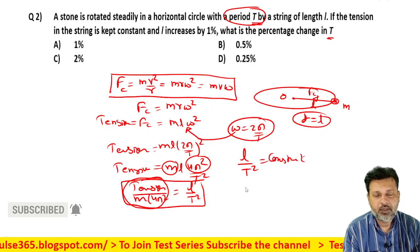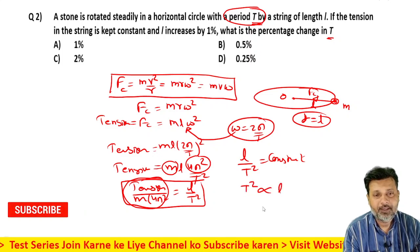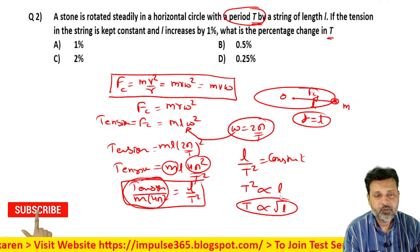If this is constant, it means T² is proportional to L, or T is proportional to square root of L. Correct.